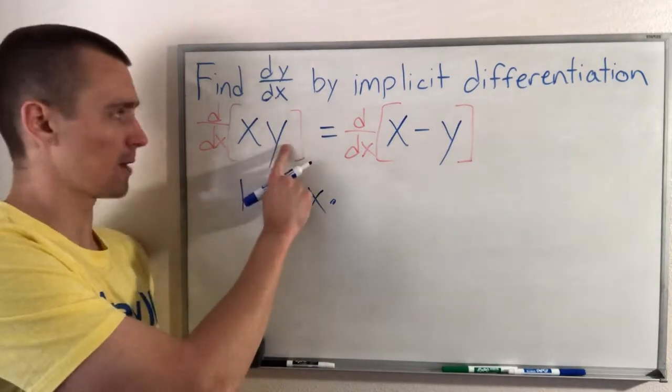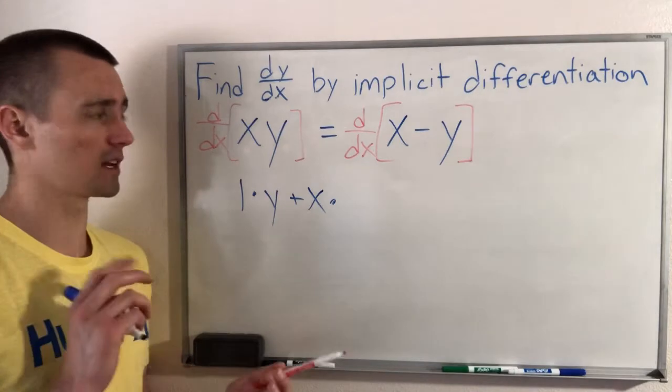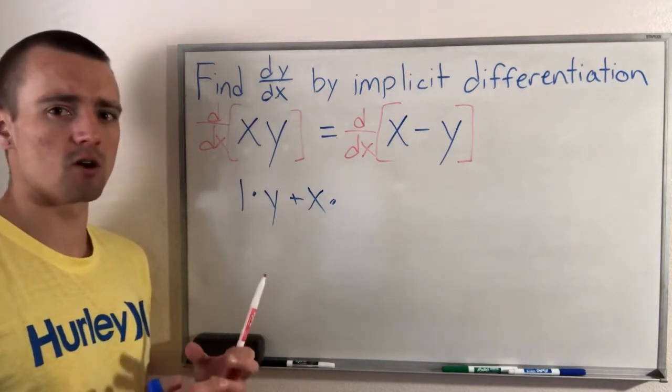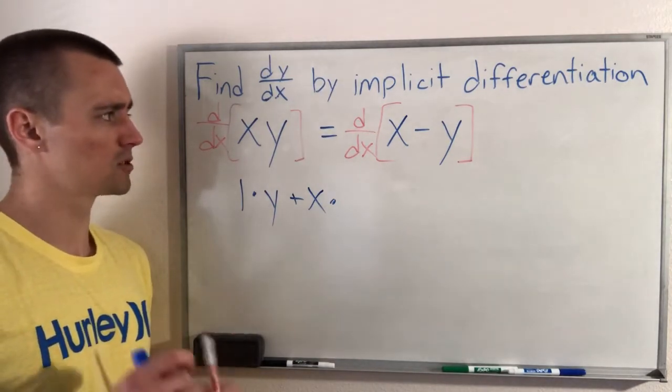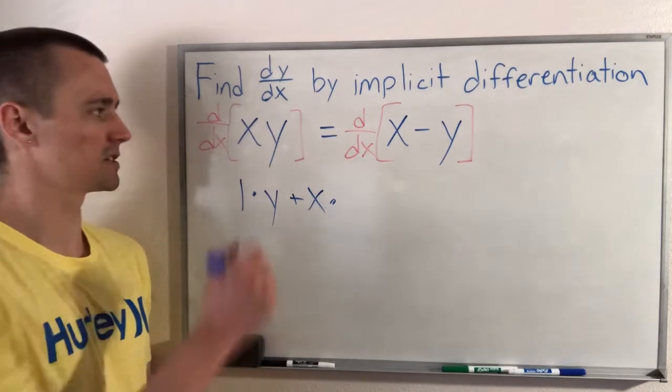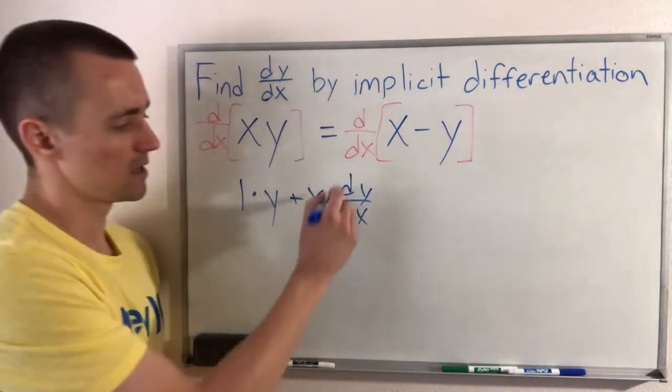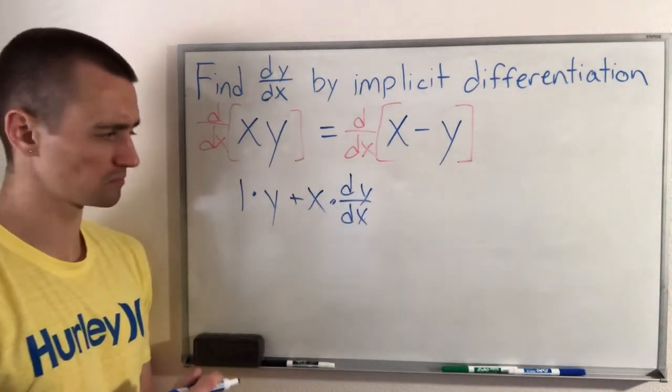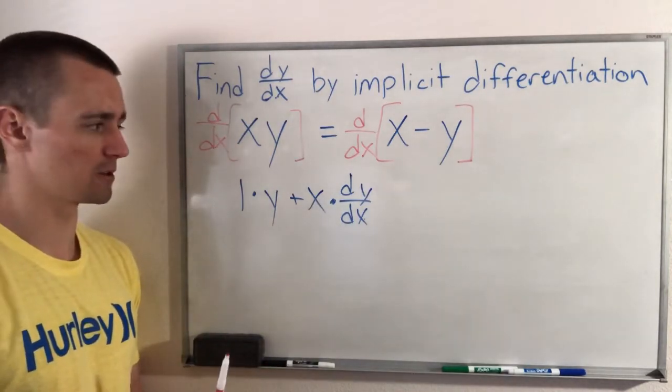What's the derivative of y with respect to x? We don't know what y is. We don't have an explicit formula for y in terms of x. So therefore, we aren't going to be able to know the exact derivative of y with respect to x. So the best we can do is to just say the derivative of y is just dy/dx. Because this represents the derivative of y with respect to x. And like I said, since we don't have an explicit formula for y, that's the best we're going to be able to do.